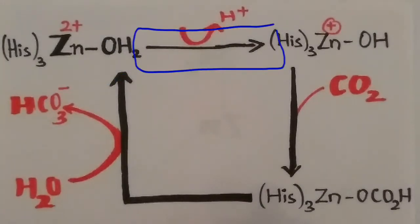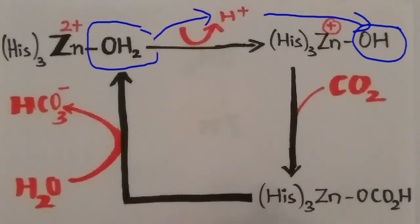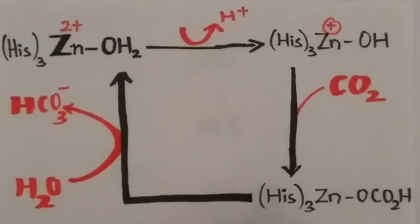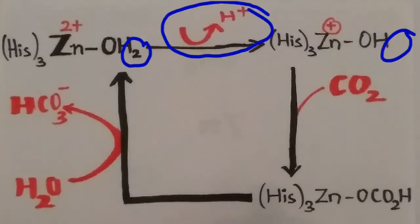Step 1 is the deprotonation of the water molecule. The zinc-bound water is more acidic than the free water molecule and loses the proton easily.